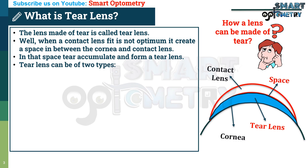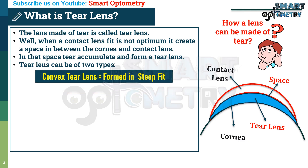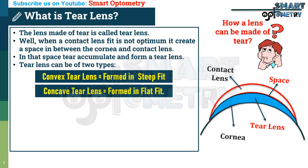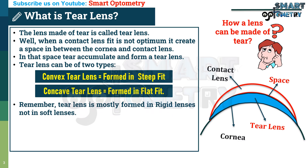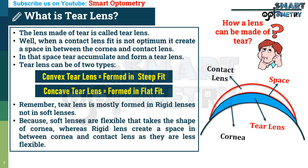Tear lens can be of two types: a convex tear lens that is formed in steep fit, and a concave tear lens that is formed in flat fit. Remember, tear lens is mostly formed in rigid lenses, not in soft lenses. Because soft lenses are flexible and take the shape of the cornea, while rigid lenses create a space between the cornea and contact lens as they are less flexible.